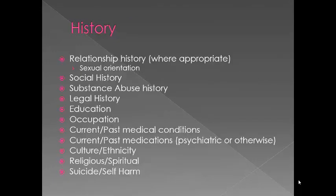When appropriate, you look at relationship histories. With a six-year-old child you obviously won't do that. You look at sexual orientation and what it means for the individual — was coming out difficult, who was supportive, how did that experience impact how they behave today? Their social history, substance abuse history, legal history — forensic patients may have more extensive substance abuse and legal histories. Education level is also important.